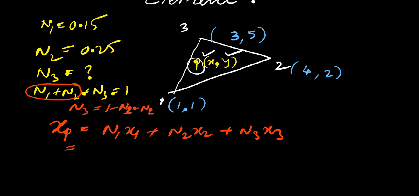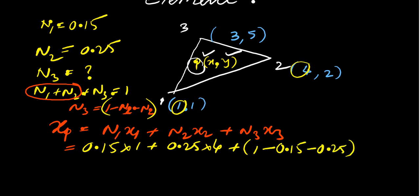N1 value is 0.15 into x value, this one is 1. Plus N2 value is 0.25 into x2 is 4. So, plus N3 value, N3 value as this one, 1 minus N1. N1 is again 0.15 directly, you can substitute, minus 0.25, N2, into x3. Into this x3. The x3 value is 3.